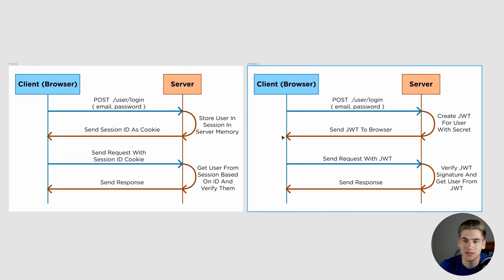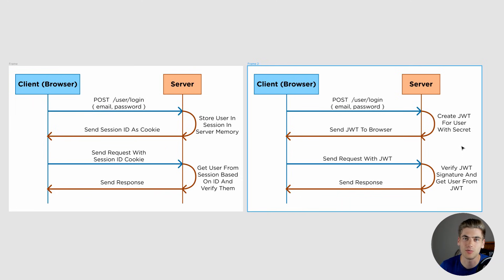The server sends that JWT back down to the browser and the browser can choose to store it however it wants — for example, in cookie storage. The client then sends a request to the server and makes sure to include that JSON web token so it knows what user it's authenticating with. The server, which signed that JSON web token with its own secret key, verifies that it has not been changed since the time it signed it. If the client changed the user information in that token, the server will know and can say it's invalid. But if nothing was tampered with, it deserializes the token, reads the user information, and if that user is authorized, sends the response back to the client.